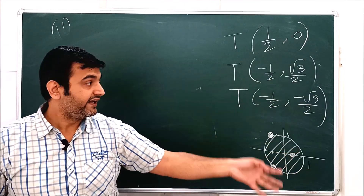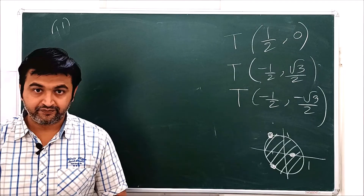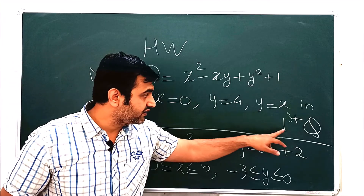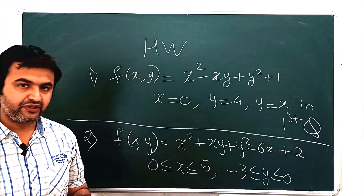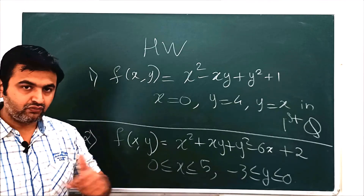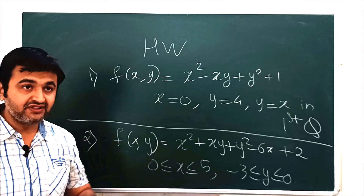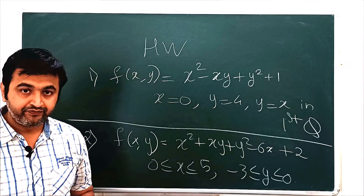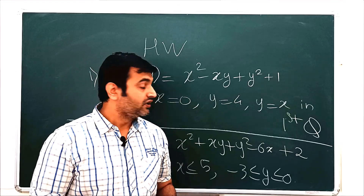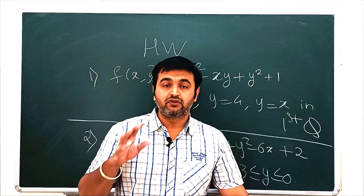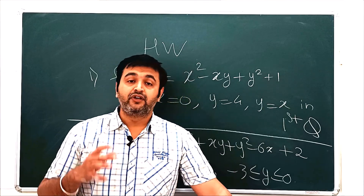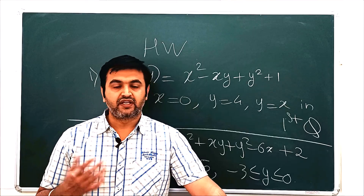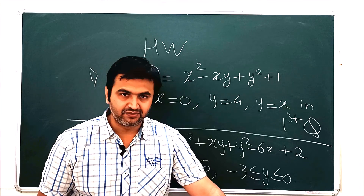Two more homework problems are given: the first involves a triangular domain in the first quadrant — divide into interior and boundary (three line segments), and don't forget the corner points. The second involves a rectangular plate — apply the same method. In the next lecture we will cover Lagrange multipliers for closed/unbounded or equality-constrained problems. If everything is clear, please like, share, and subscribe, and ask questions in the comments.